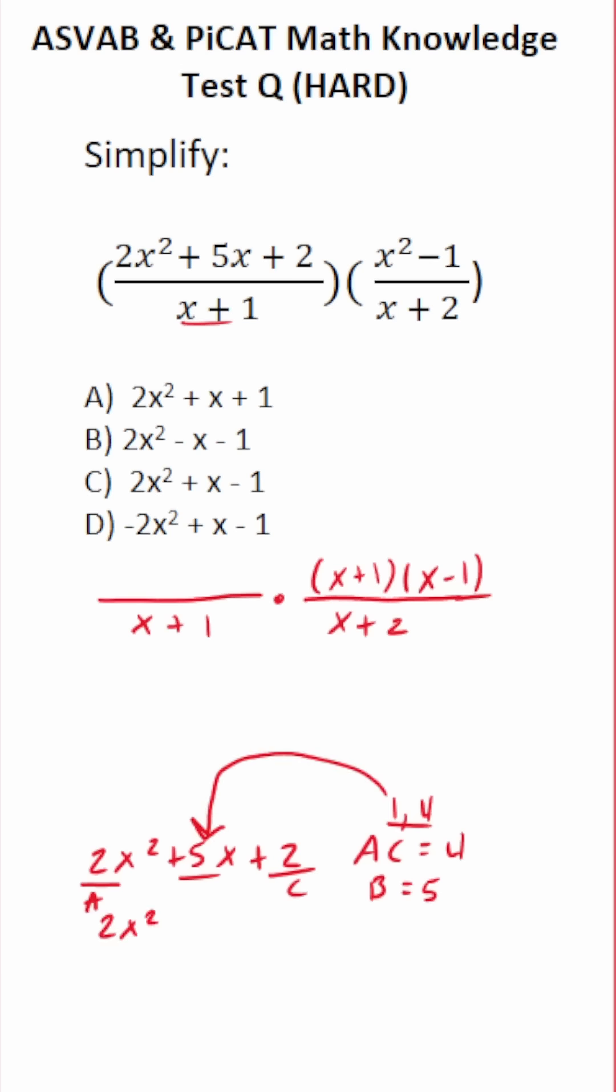So this is 2x squared. I'm going to put this 4 first plus 4x plus 1x. 1x is just x plus 2. Now we're going to factor by grouping.